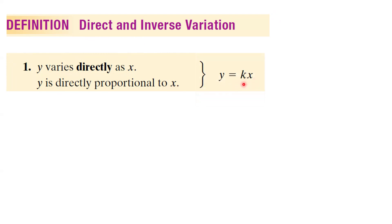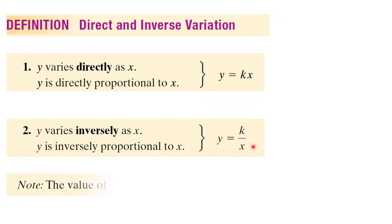k is the constant of proportionality. Or we can say that y varies inversely as x, or y is inversely proportional to x, and we write y as k divided by x. In either case, the value of k is called the constant of variation.